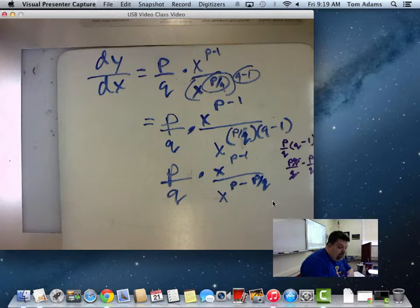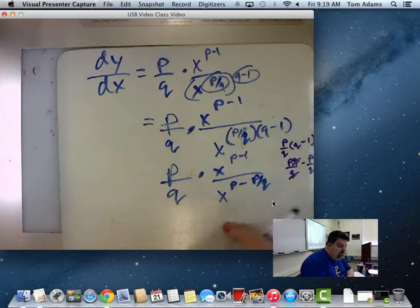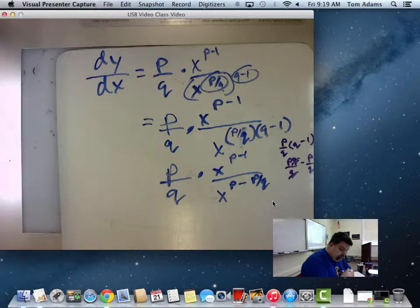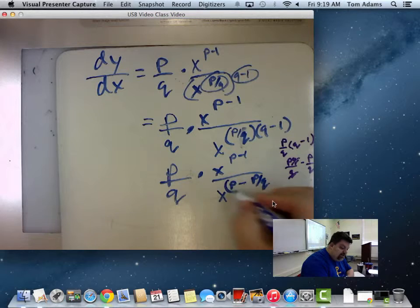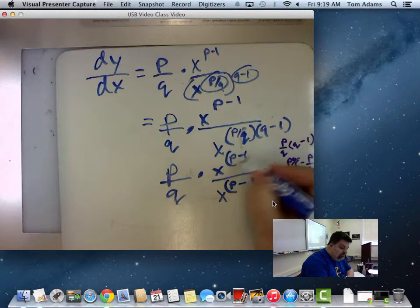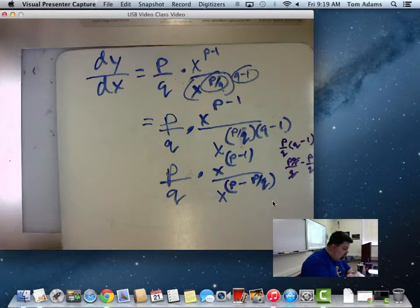So then this becomes X raised to the P minus P over Q. But now what can I do? If I want to move this up to the top, how do I move this up to the top? I subtract this from the top, right?